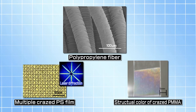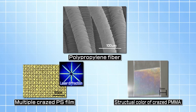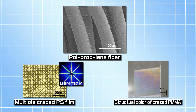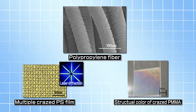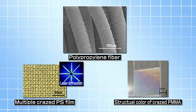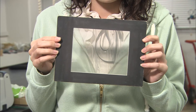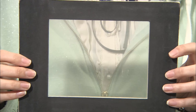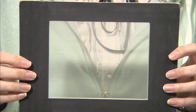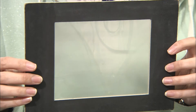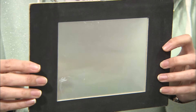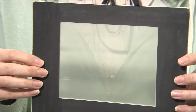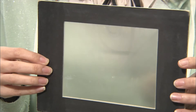We can control craze morphology, emerging intervals, width, and depth by several crazing conditions. This is the crazing film. You can see this film demonstrates a functional performance of isotropic light scattering. Craze layers act as the slats of a window shade. This view-field selective film is commercialized as a view-field control film for mobile phones.